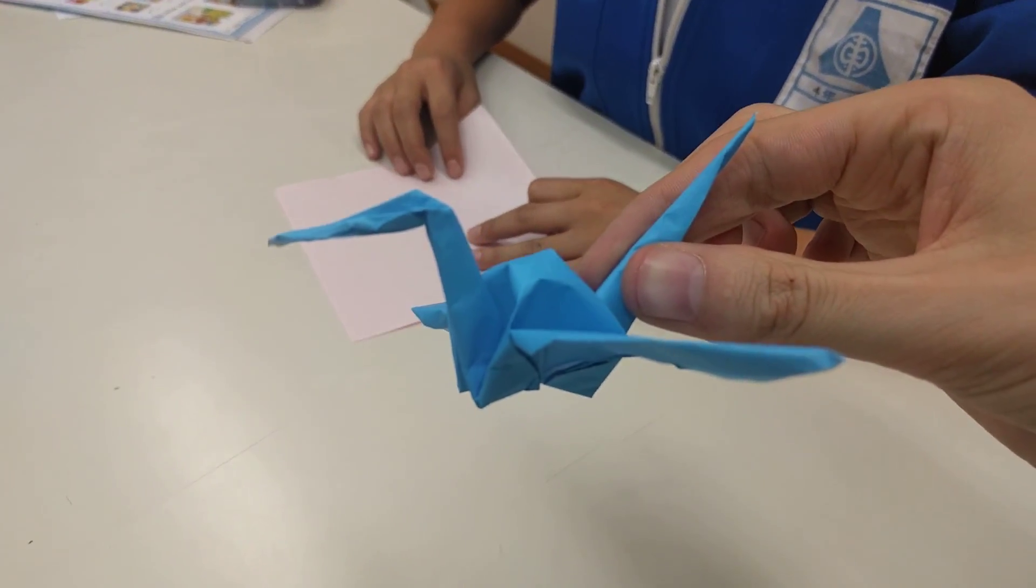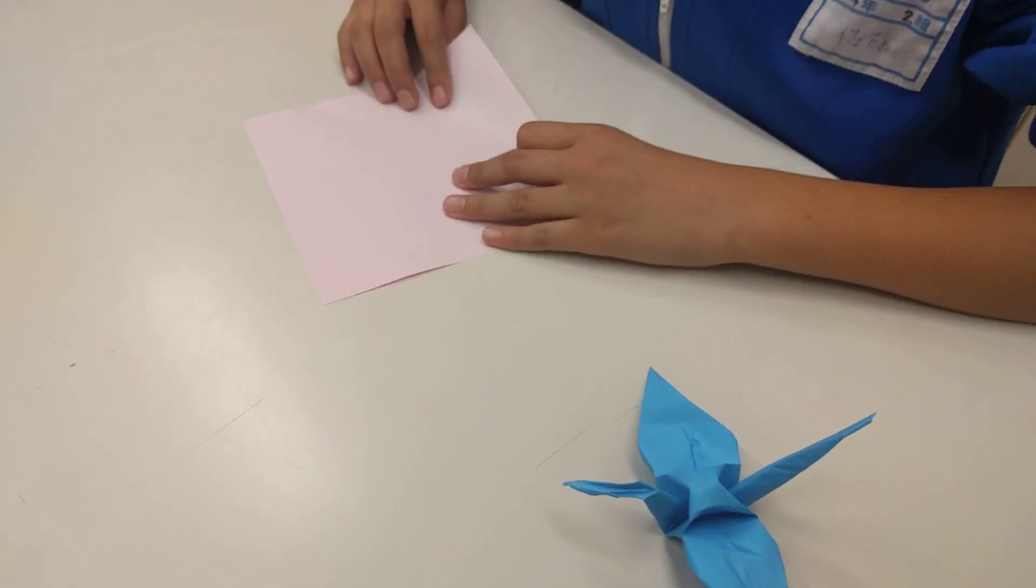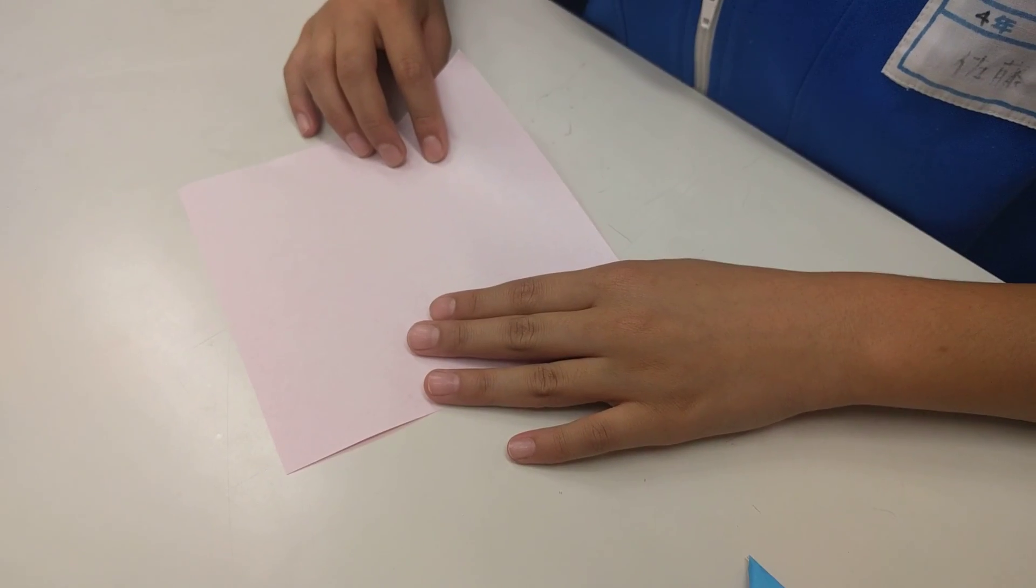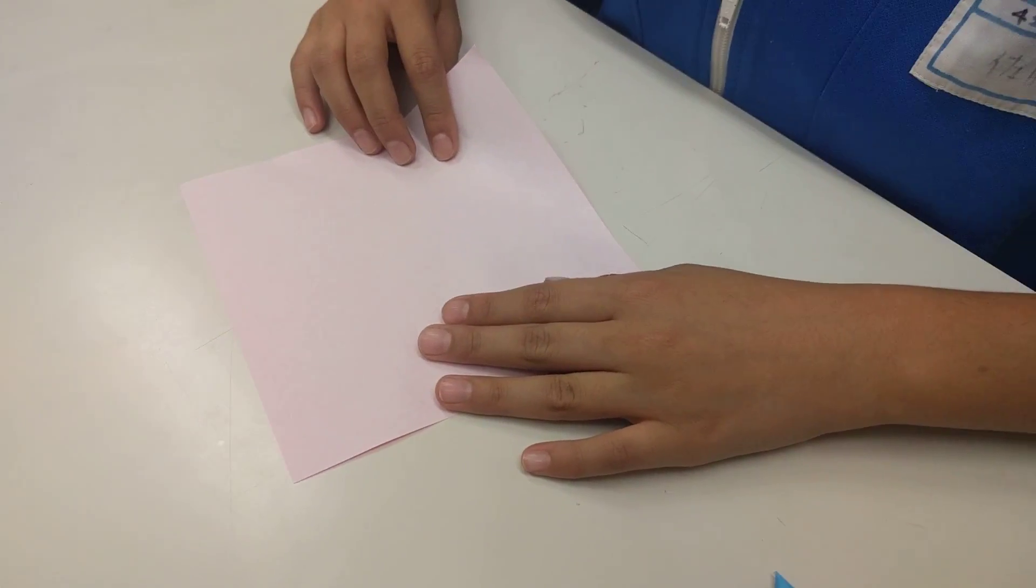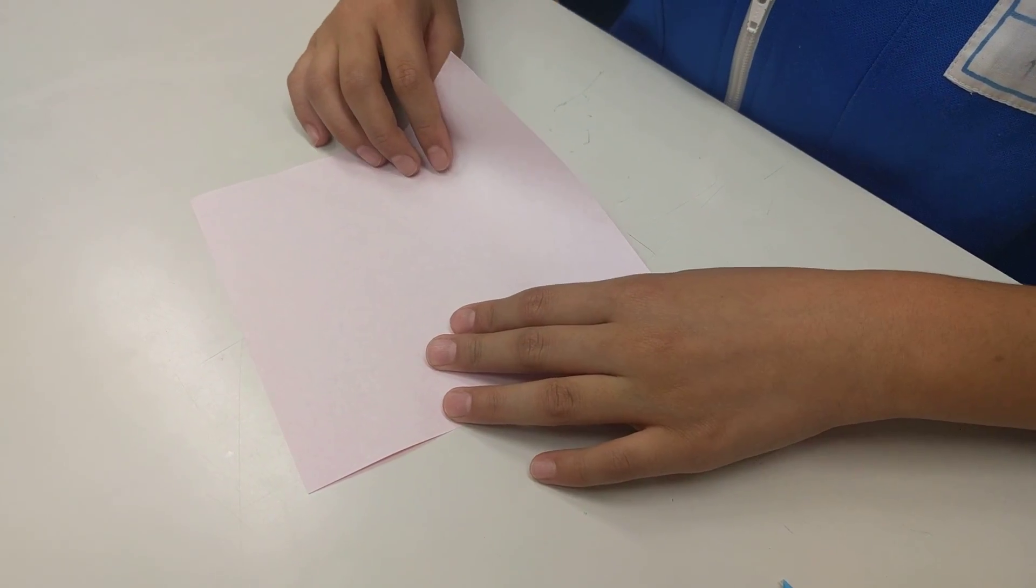Okay Brady, thanks for your comment and here is Renault showing you how to make a crane. So first you need a square piece of paper, right? Okay, off you go Renault.